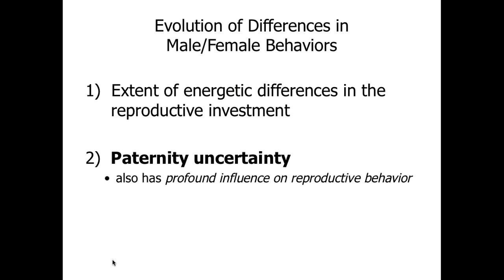The extent of energy investment in reproduction causes some of these differences, but so does paternal uncertainty. The mother always knows that the offspring are hers, but for the father, there's a degree of uncertainty — he can never be quite certain the offspring were really fathered by him and not some other male. So that's going to affect, for many species, how males both regard their offspring and how they interact with and try to find females.